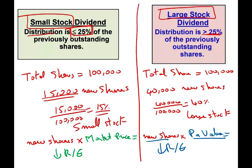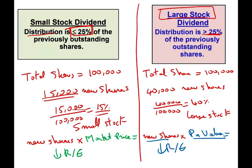Why am I emphasizing this? Because on the exam — specifically on the CPA exam — they don't tell you whether it's a small or large stock dividend. What they do is tell you we issued 15,000 or we issued 40,000, and you have to determine whether that amount is above or below the 25% threshold to determine whether you treat it as a small or large stock dividend. They will never ask you about exactly 25%; if it's exactly 25, the company makes their own judgment. So let's look at an example to record a small stock dividend, then we'll look at a large stock dividend.